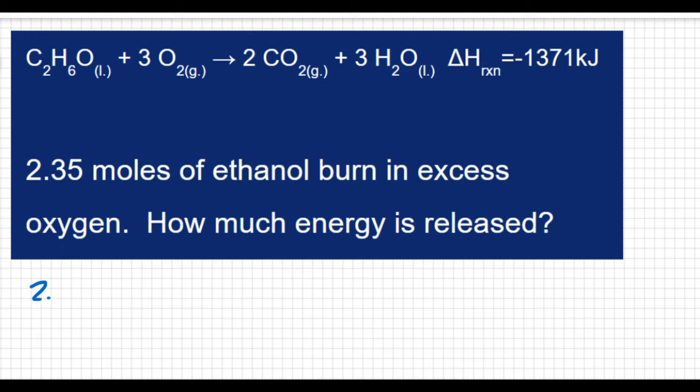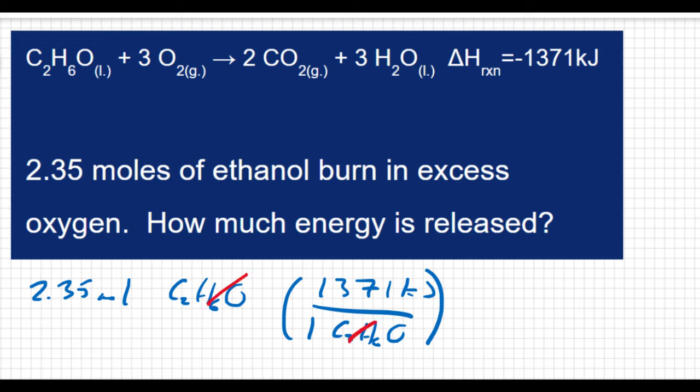In this problem, we have 2.35 moles of ethanol, C2H6O. We know 1371 kilojoules are released for every one mole of C2H6O. Just like in other stoichiometry problems, we multiply: 2.35 times 1371 divided by 1 equals 3222, but with three sig figs, we write this as 3220 kilojoules.